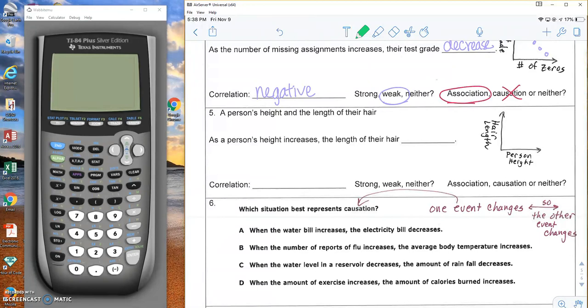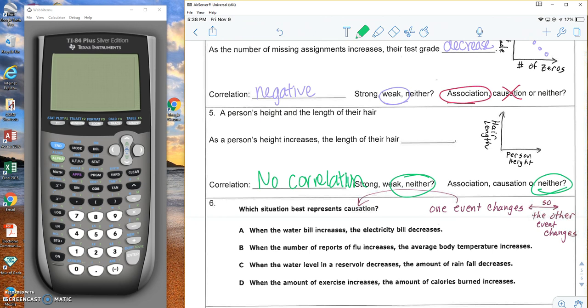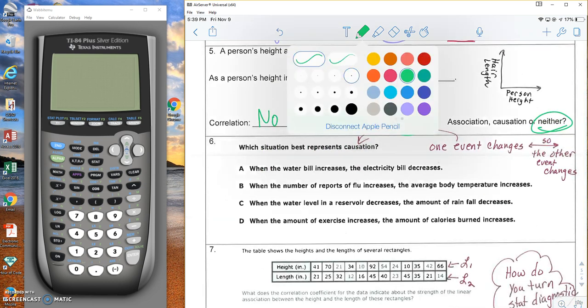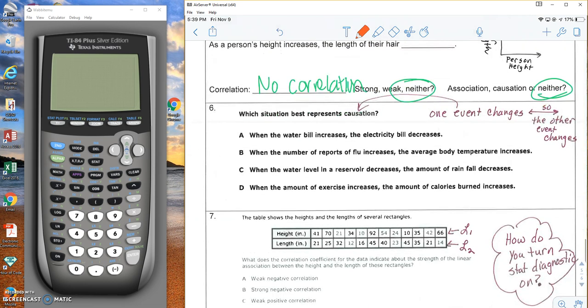Now, a person's height and the length of their hair. I'm 5'4 and I have long hair. Someone else can be 5'4 with short hair. These are not correlated. There is neither correlation. It's not strong or weak. There's no association causation. One does not cause the other. We don't have to draw a graph or fill in that sentence.